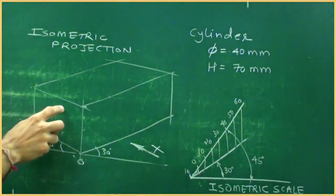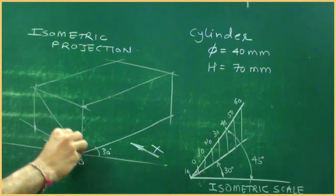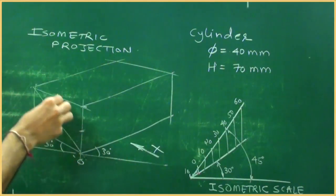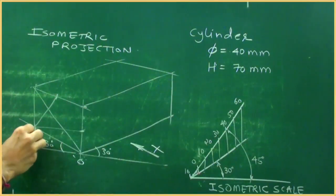So what we need to do in this, we need to draw circle here using four center method, so again we will draw longest diagonal, wherever angle is more than 90, opposite midpoint we will join, you can start from here also